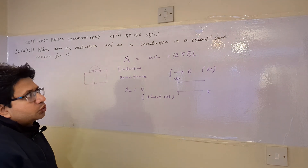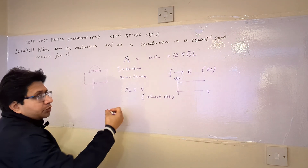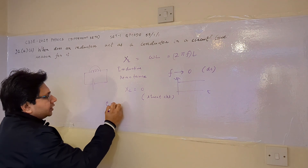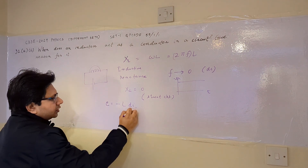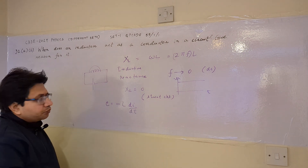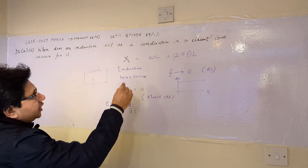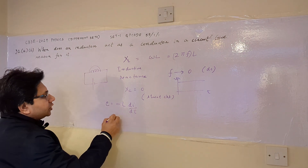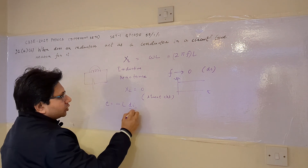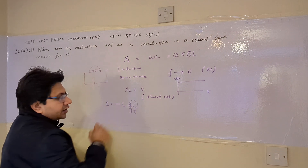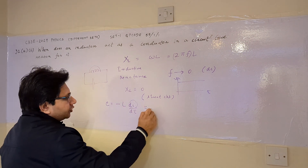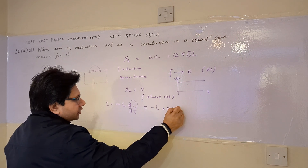This particular problem can also be analyzed in another way. We know that the EMF across the inductor is given by E equals minus L di by dt. Now, to behave as a conductor means a short circuit, and short circuit means the voltage across it is 0. The voltage is 0 because for the applied DC signal, the change in current is 0. So di becomes 0, and minus L into 0 equals 0.